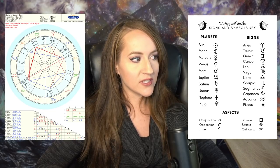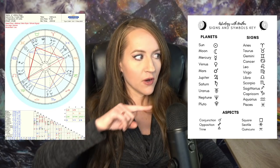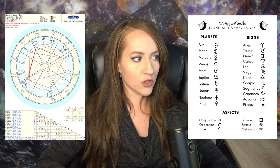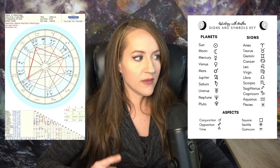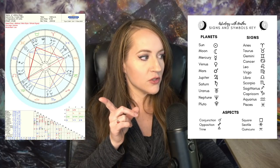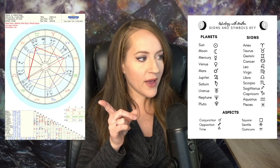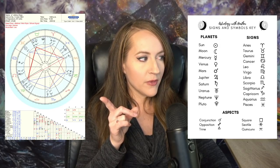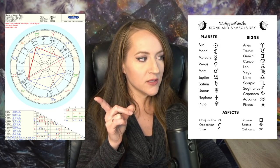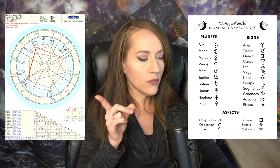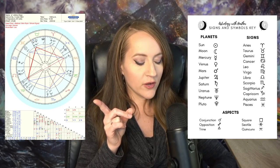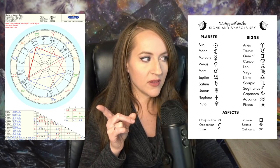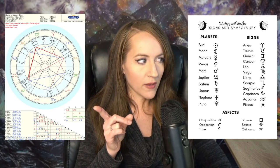On the outer circle of the chart, you can see the whole zodiac — so the outer circle is showing you the zodiac signs, from Aries all the way through Pisces in different colors. On astro.com, red represents the fire signs, yellow represents the air signs, green represents the earth signs, and blue represents the water signs. These are the different elements in astrology.